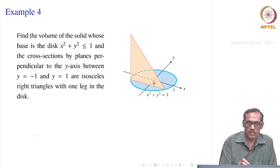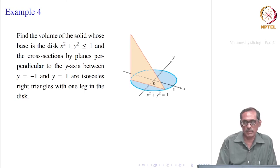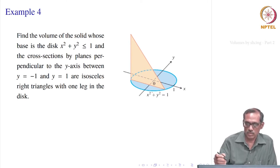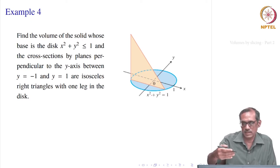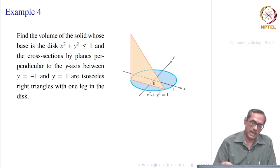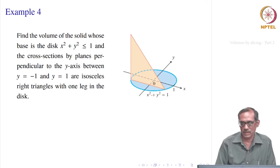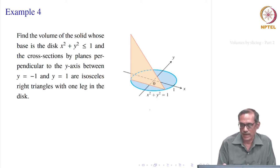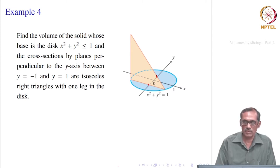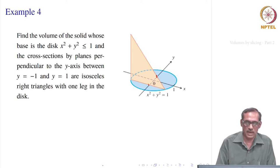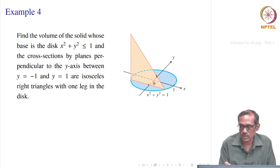That is where the base of the solid is. The cross sections by planes perpendicular to the y-axis — so if you take any cross sectional area, take the slice of the solid by a plane perpendicular to the y-axis, that is parallel to the xz-plane, then you will get the limits for y as −1 and 1. And it forms an isosceles right triangle with one leg in the disc.